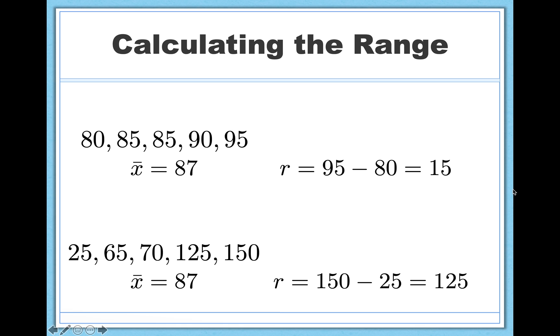So in this case, I would do well to report both to you. I'll tell you the mean and this measure of variability because that gives you a more full picture of what's going on. So a mean of 87 and a range of 15 describes a very different situation compared to a mean of 87 and a range of 125. So again, it's a great idea for me to report both. And this is what's often done.